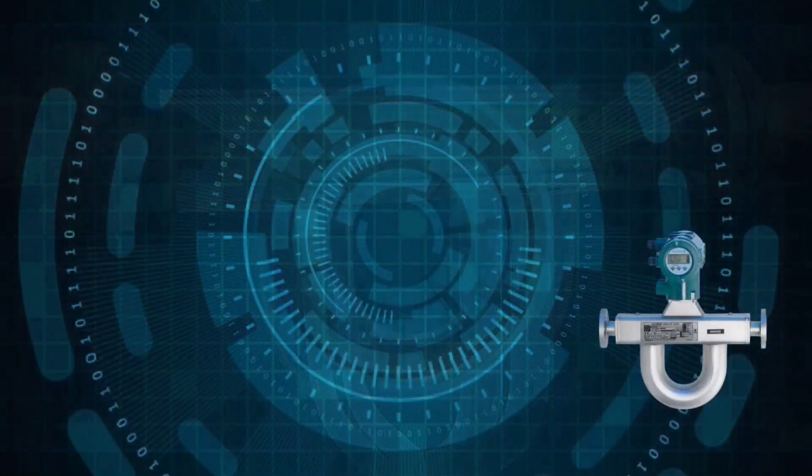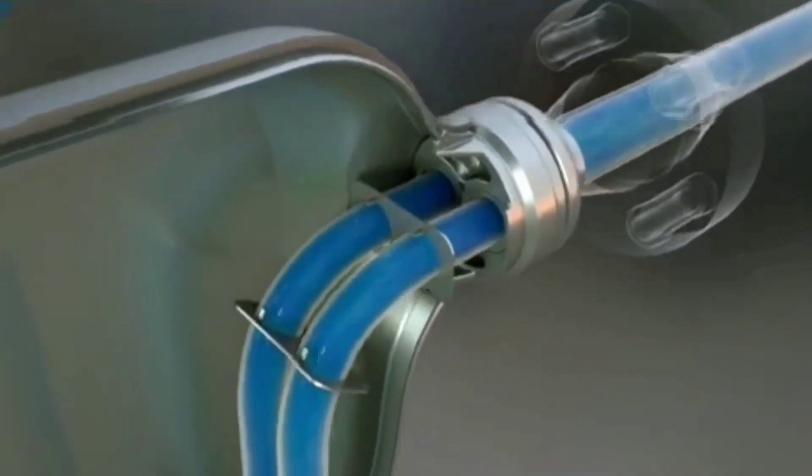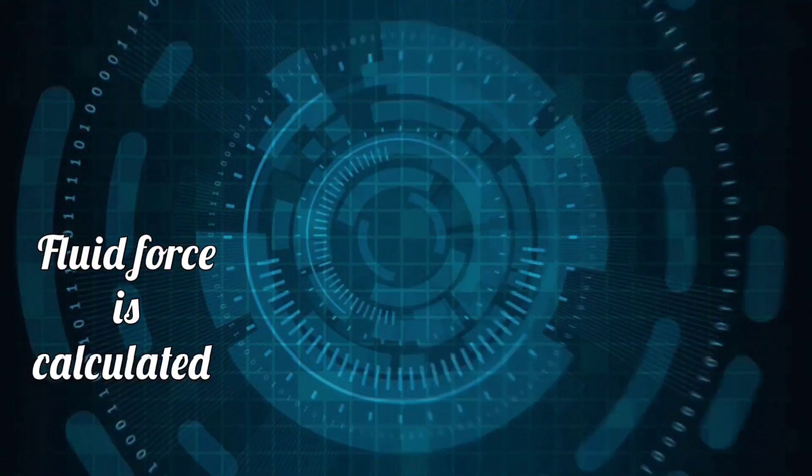When the fluid passes through the mass flow meter, it gets divided into these tubes. Now, the Coriolis effect will take place in it. In the Coriolis effect, when the fluid is passed through a curved path, that force is measured, or fluid force is calculated. When it flows through a curved path, due to this force.